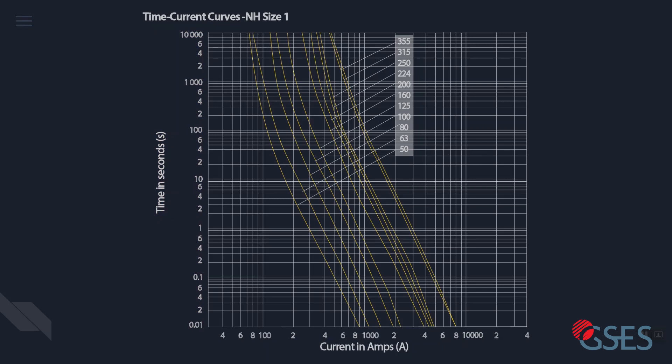Anything to the left of a curve is a current the fuse can handle. For example, a 200 amp fuse will be able to handle any current that is within this red highlighted area. More specifically, the fuse will not blow when current and time conditions are within this red area, but it will blow to the right of the curve.